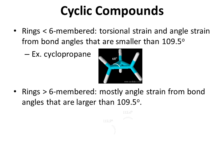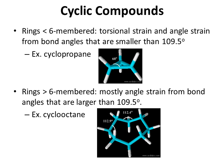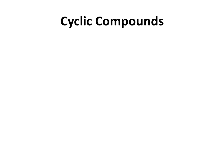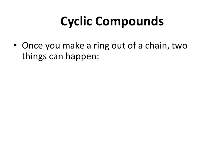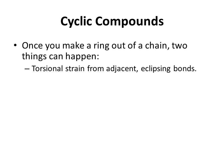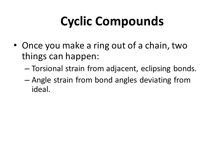The angle strain in cyclopropane comes from the fact that the ring is so small that the bond angle is 60 degrees, much smaller than the expected 109.5 degrees for sp3 hybridized carbon. For rings that are greater than six-membered, there is mostly angle strain from bond angles larger than 109.5 degrees. In cyclooctane, for example, bond angles of 112.4 and 112.9 degrees are much larger than the expected 109.5 degrees. Once you make a ring out of a chain, you can get torsional strain from adjacent eclipsing bonds and angle strain from bond angles deviating from ideal. Torsional strain plus angle strain in a ring equals ring strain.